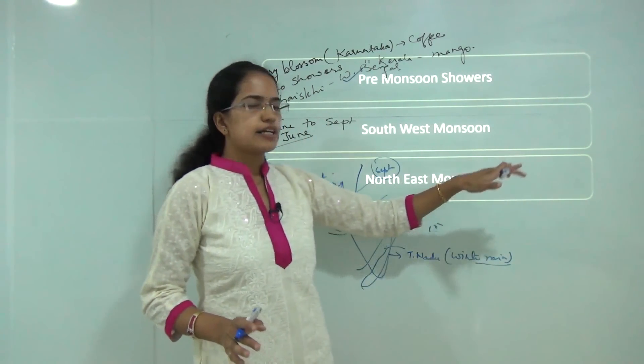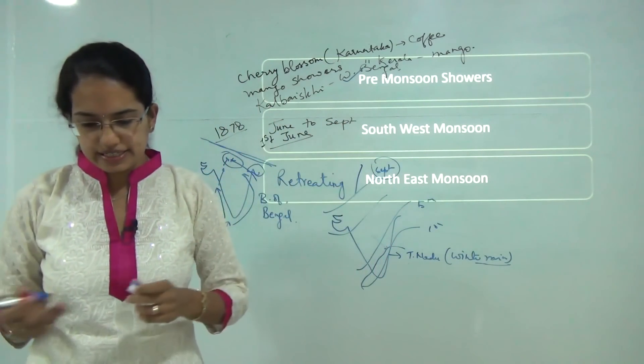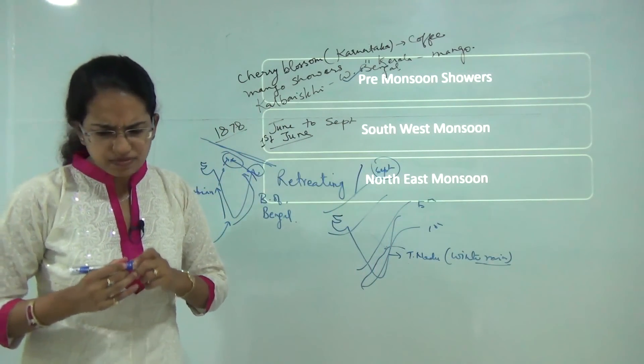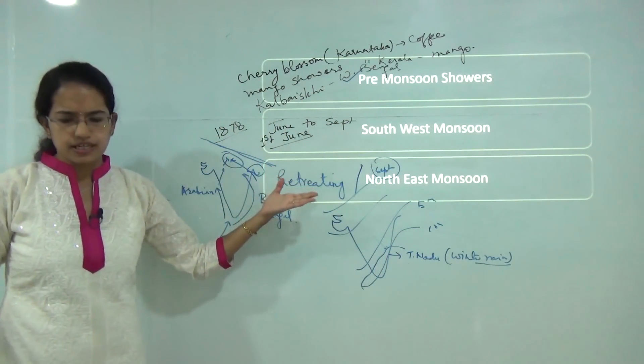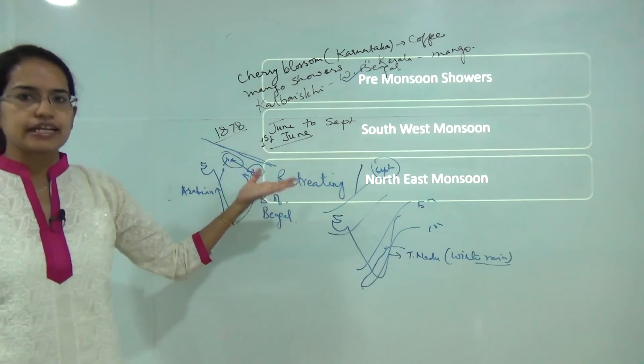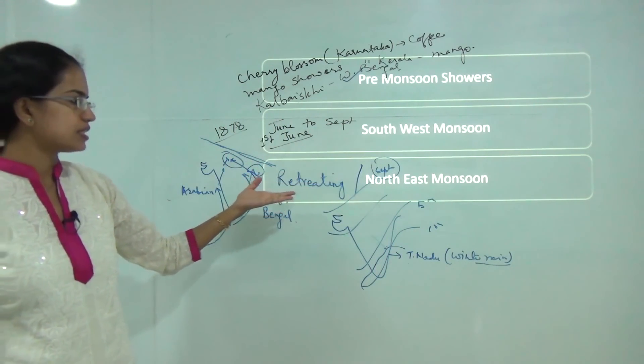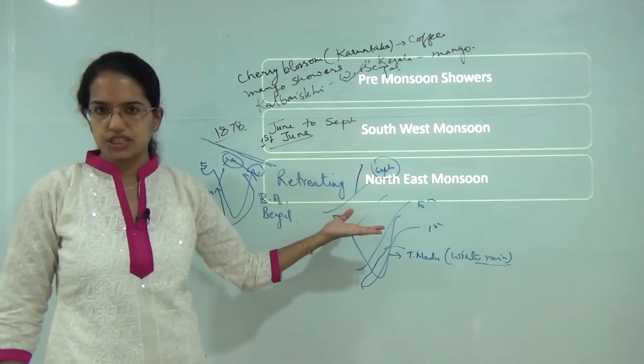Retreating monsoon is associated with clear skies, lots of sunlight, increase in temperature, and decrease in moisture content.